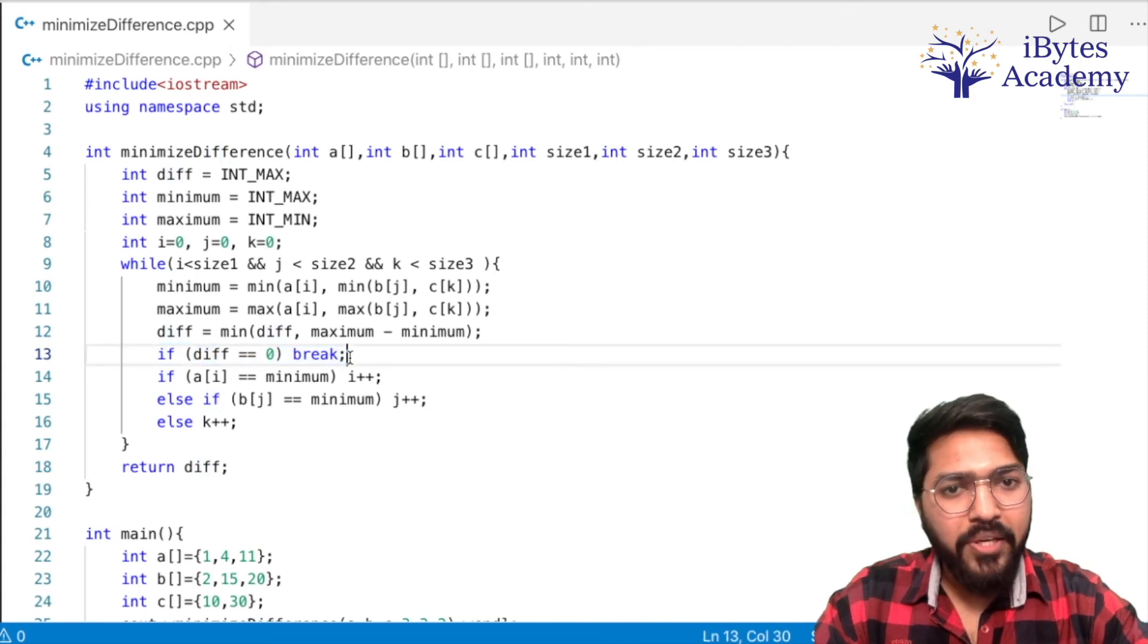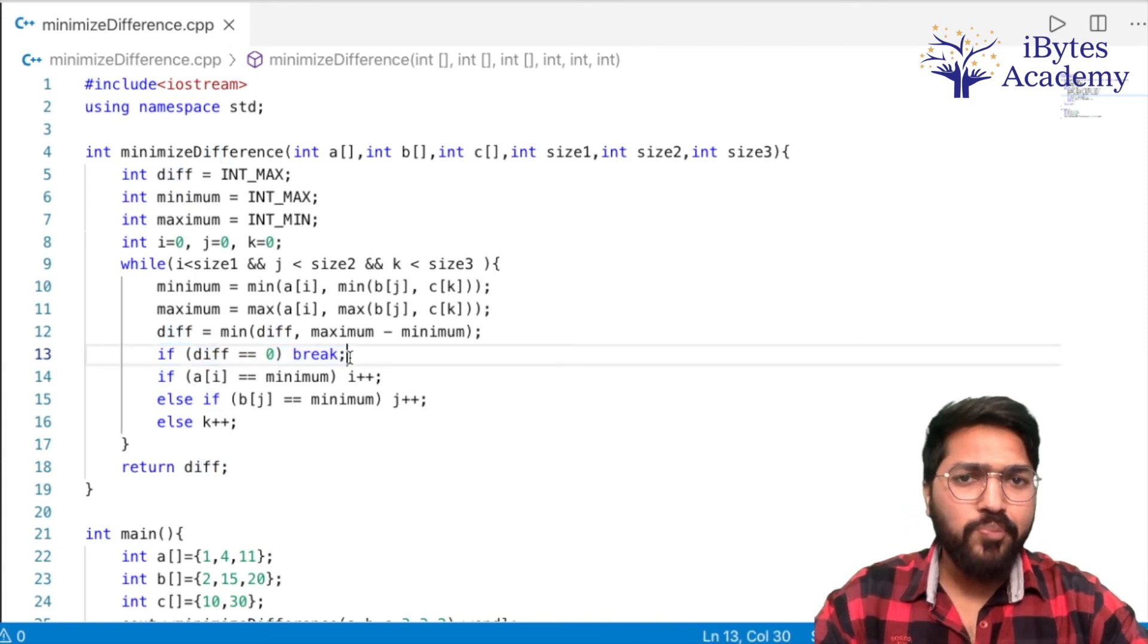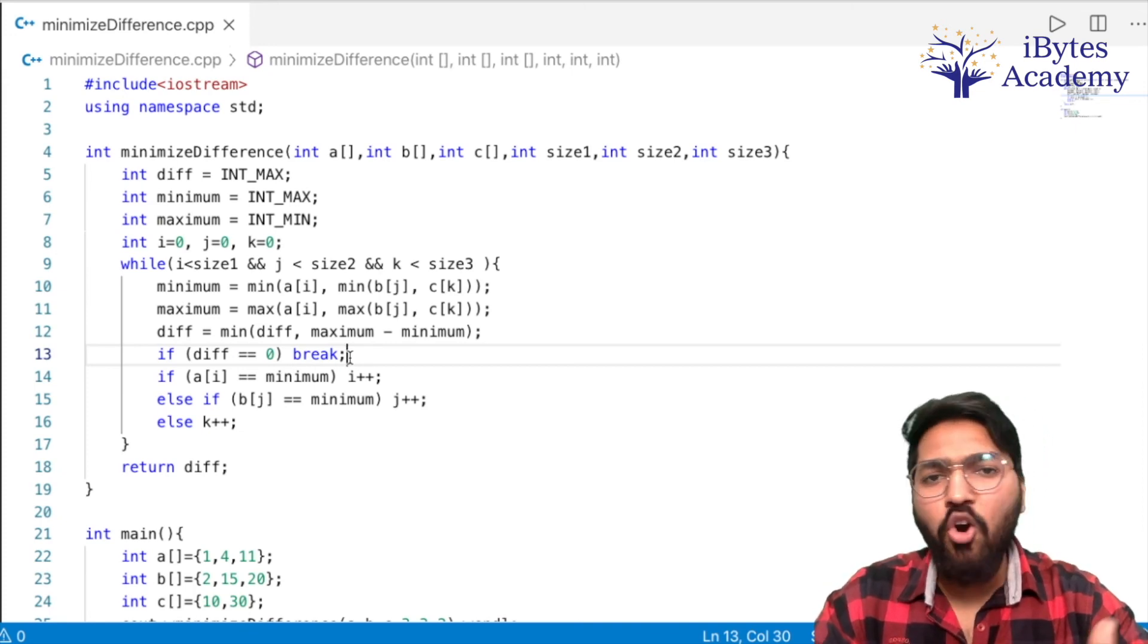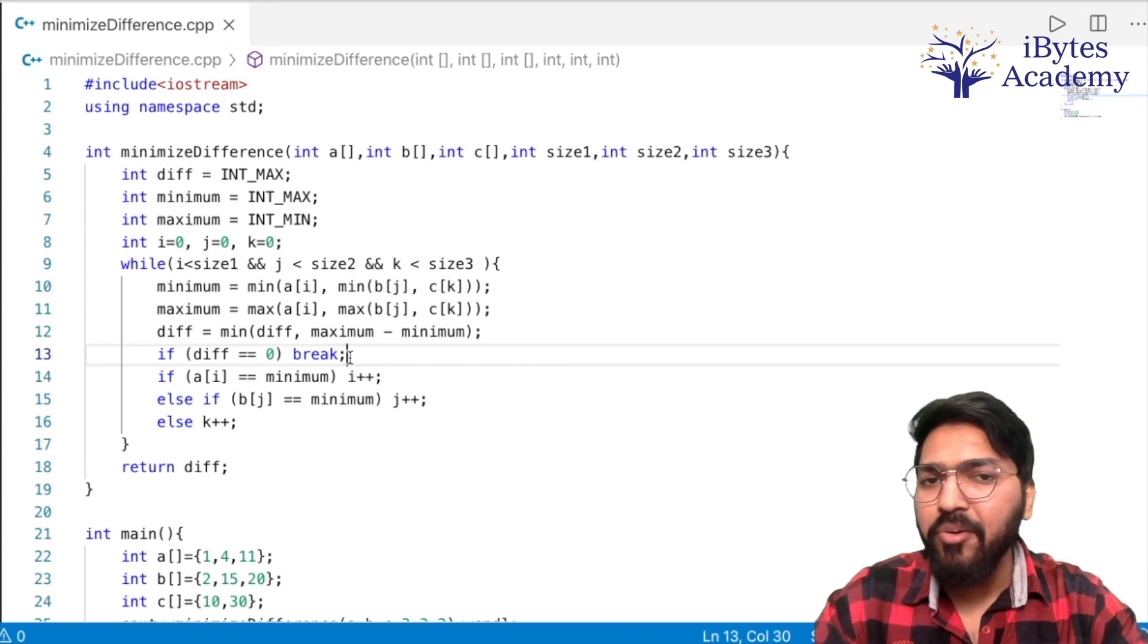If difference equals zero, break. Right? Now for this problem, the minimum value of output can be zero. If we've already got zero, then we don't need to find more triplets. We can straightaway break.